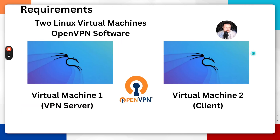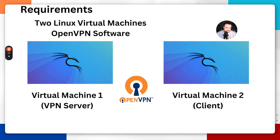Now that you know what a VPN is, the requirements for this project are two Linux virtual machines, OpenVPN software, and EasyRSA. One virtual machine is going to act as the VPN server, and the second is going to act as the client so that we can test it.